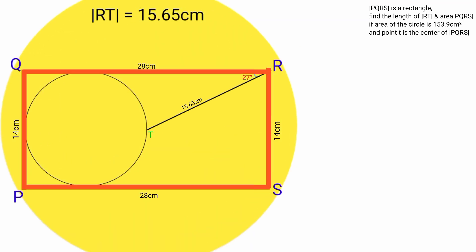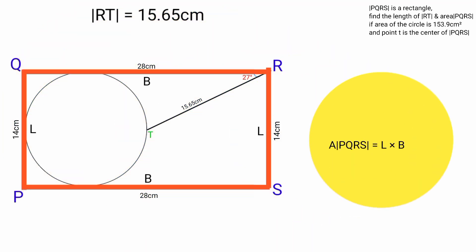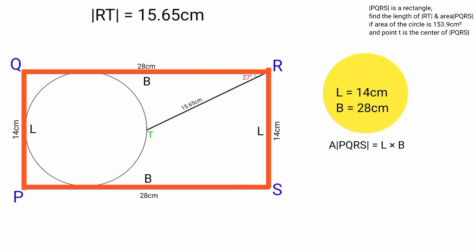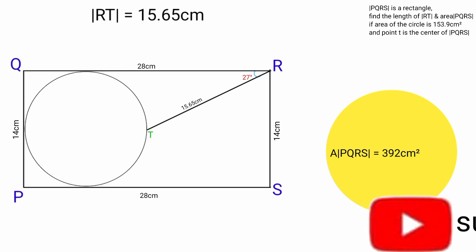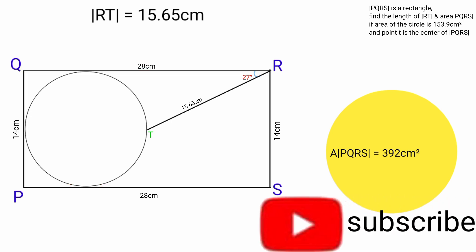So line RT equals 15.65 centimeters. Coming back to the surface area of rectangle PQRS: the formula is length times breadth, where L equals 14 cm and B equals 28 cm. So area of PQRS equals 14 times 28, which equals 392 cm squared. Thank you for watching — please subscribe to this channel and click the notification button to get notified when we post a new video.